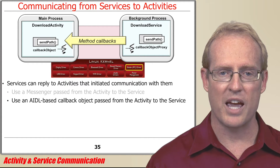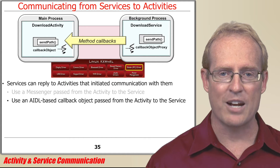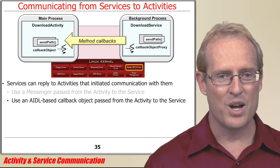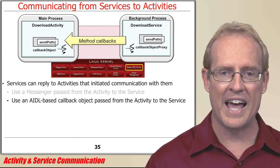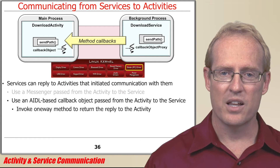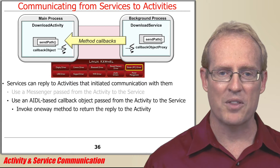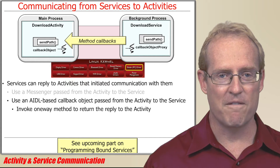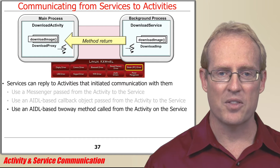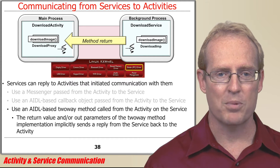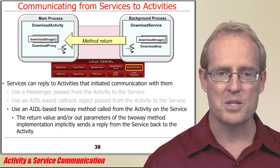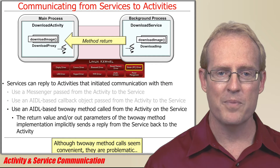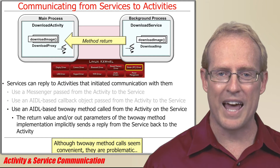Another common service-to-activity communication mechanism involves the use of callback objects based on the Android Interface Definition Language, or AIDL, which can be passed from the activity to the service via a one-way AIDL method call. In this approach, the service simply invokes the appropriate one-way AIDL method on the callback object to return its reply back to the activity. A variant of this approach uses a two-way AIDL method called from the activity on the service, which implicitly returns a reply when the upcall from the stub to the two-way method implementation is done. Although two-way method calls seem convenient to program, they're actually rather problematic since they execute synchronously, which can block the activity and trigger the dreaded application-not-responding exception.